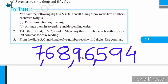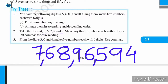In this way, using a few given digits and repeating some, you can make numbers and put commas so that you can read those large numbers easily. You can make any three numbers like this and write the number name with commas in your notebook.